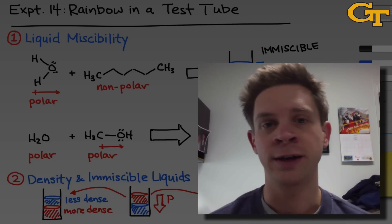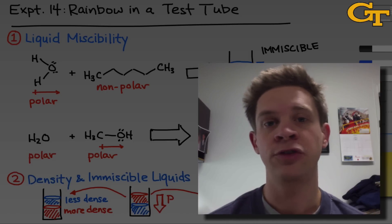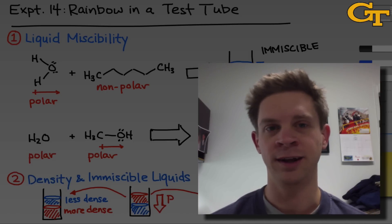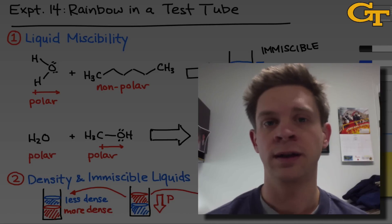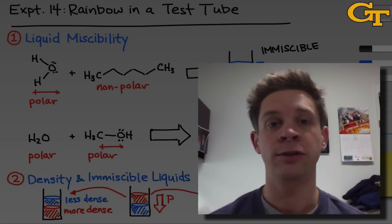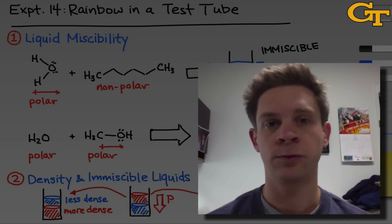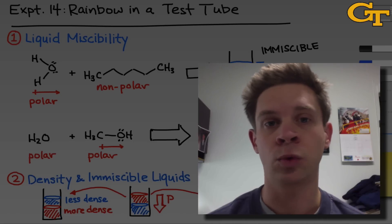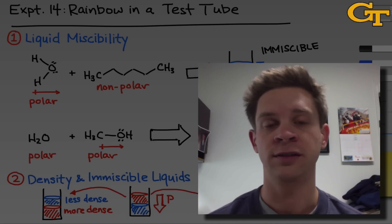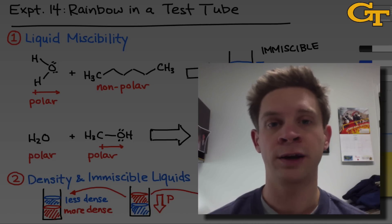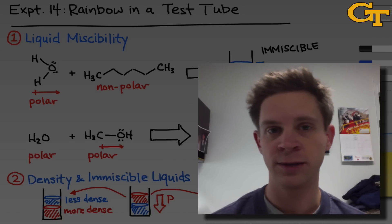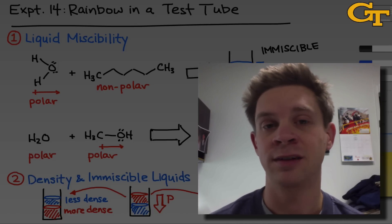To get to the rainbow stage, we need to appreciate and apply liquid miscibility and relative density. We'll start with six unknown liquids and perform miscibility tests to determine whether, when mixed, pairs of liquids form one continuous layer or two distinct layers. We'll also look at which substance ends up on the bottom and the top of a two-layer mixture to reason about relative density.